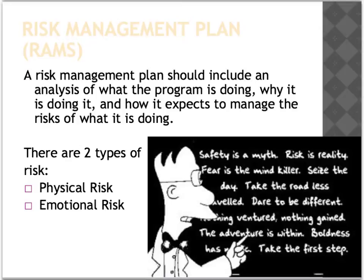Alright, RAMS forms. A risk management plan should include an analysis of what the program is doing, why it is doing it, and how it expects to manage the risks of what it is doing. There are two types of risk: physical risk and emotional risk.